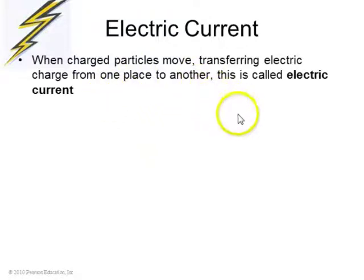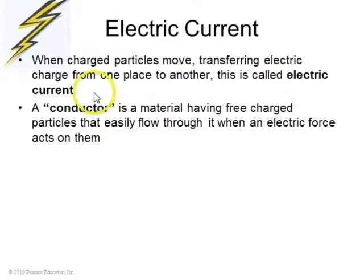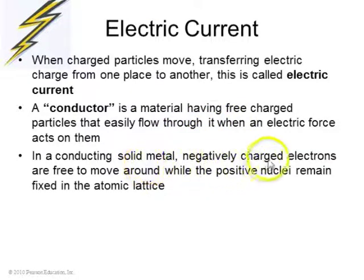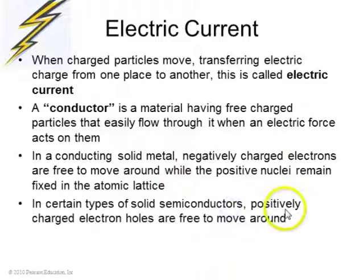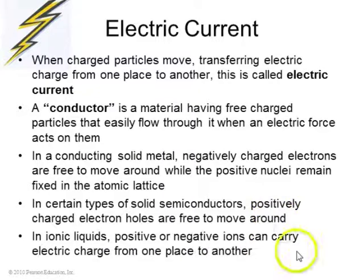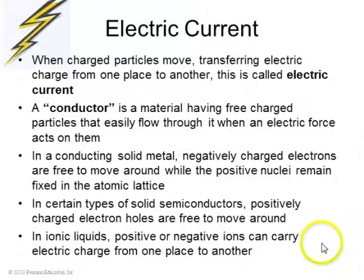Current: when charged particles move, they transfer electric charge from one place to another — that's called electric current, or just current. A conductor is a material that has some free charged particles that can move around. For example, in a metal, negatively charged electrons can move around inside the metal, while the positive nuclei remain fixed in the lattice. Certain solid semiconductors have positively charged electron holes which can roam around inside the material. In liquids, there can be ionic liquids where positive or negative ions move around carrying current.